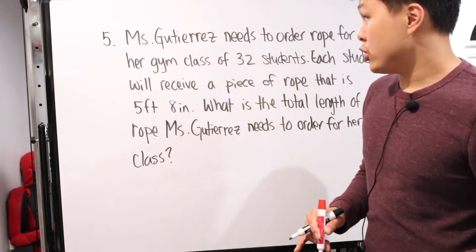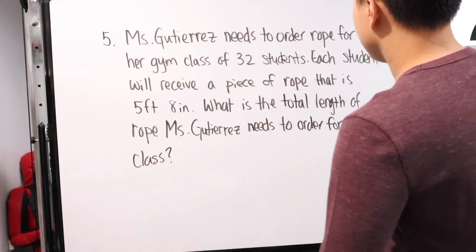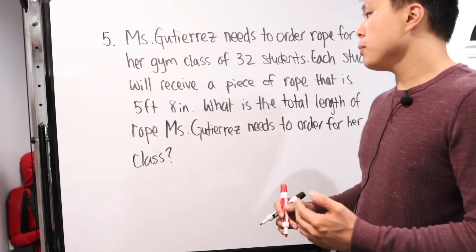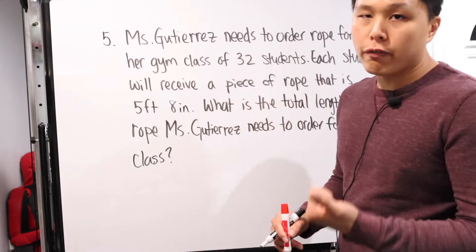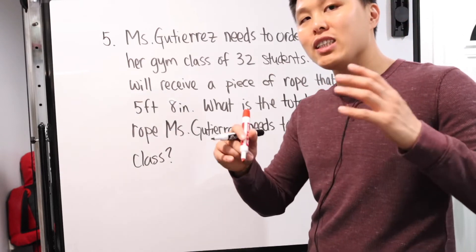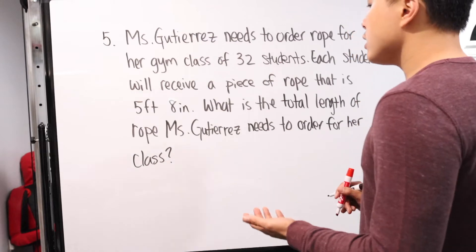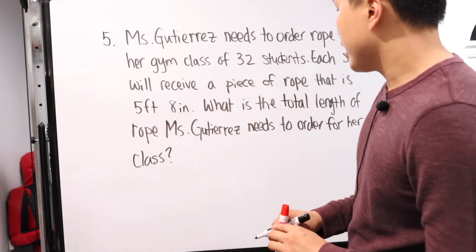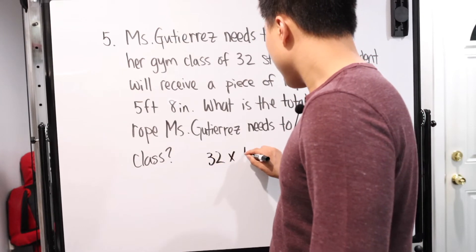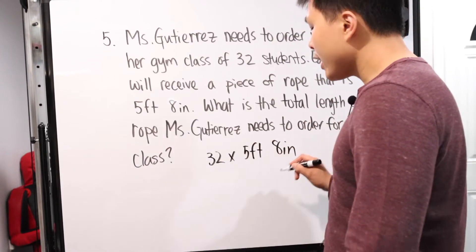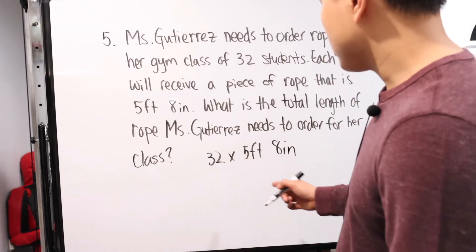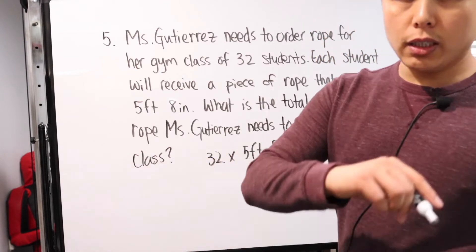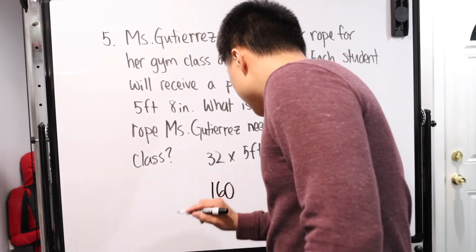Here is our next question: Ms. Gutierrez needs to order rope for her gym class of 32 students. Each student will receive a piece of rope that is five feet eight inches. What is the total length of rope Ms. Gutierrez needs to order? This is a fairly simple multiplication problem. You have 32 students, each needing five feet eight inches of rope. Break it down: 32 times five feet is 160 feet.